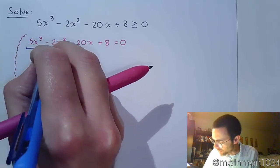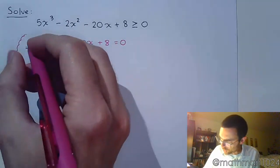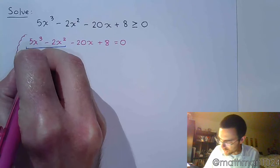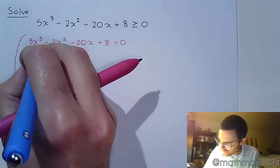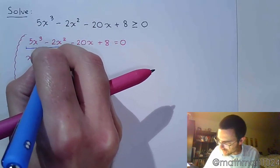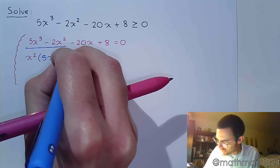And it looks like we can factor this guy by grouping. So in the first group we have the common factor of x², leaving us with 5x - 2.